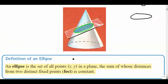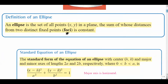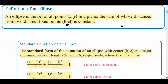So what is an ellipse? By definition, it's the set of all points in a plane the sum of whose distances from two distinct fixed points is constant. These fixed points are called foci — foci is the plural of focus. It's a fancy way of saying it's an oval, and those two foci describe where all the points go.